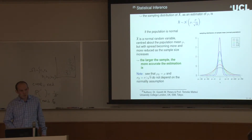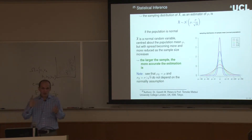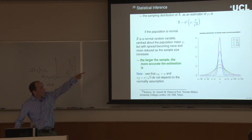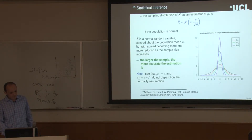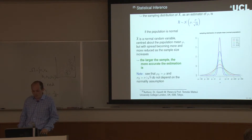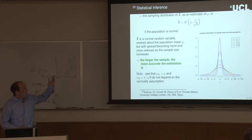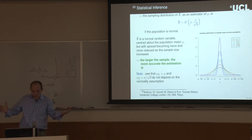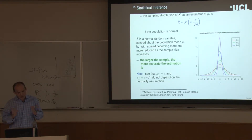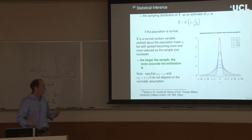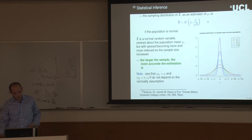The sampling distribution of our estimator X-bar has mean μ and standard deviation σ/√n. This shows our estimator is a normal random variable centered around the population mean, which is what we want. As we draw more samples, the spread — the standard deviation — narrows in on μ. The larger the sample, the more accurate the estimation, and this happens at a rate of 1/√n in the standard deviation.